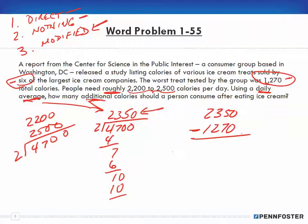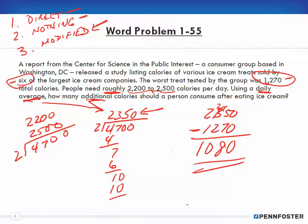Doing the subtraction: 2,350 minus 1,270. Zero from zero is 0; 7 from 15, carry the 1, that's 8; 2 from 2 is 0; and 1 from 2 is 1. So the answer is 1,080. A person would need an additional 1,080 calories to consume after eating ice cream in order to hit their average daily calorie requirement. That was a more complicated one, so let me go over it again.